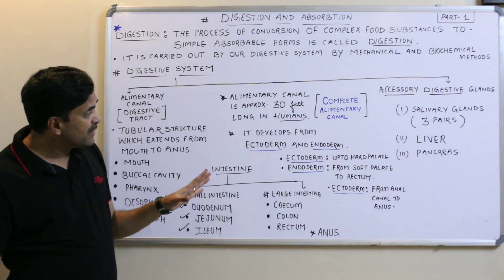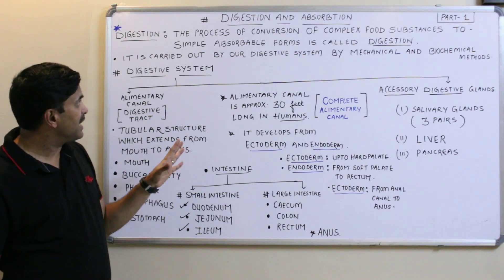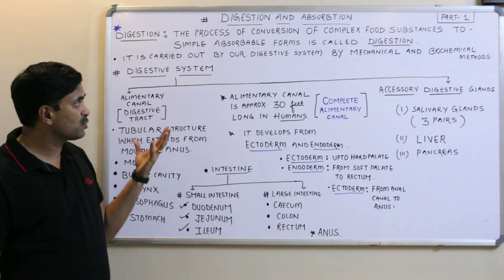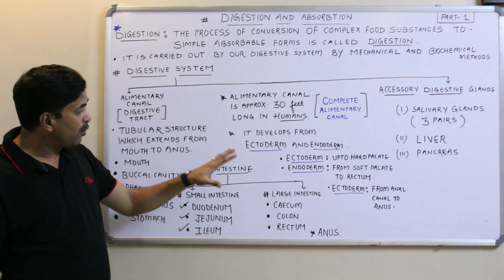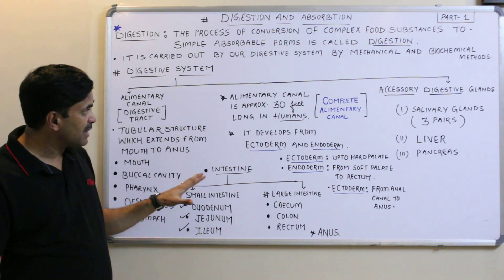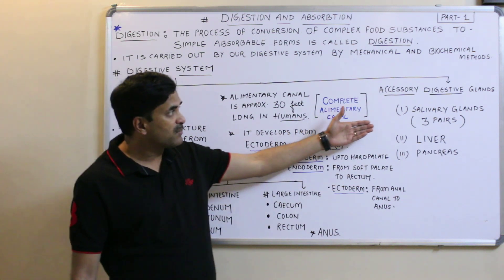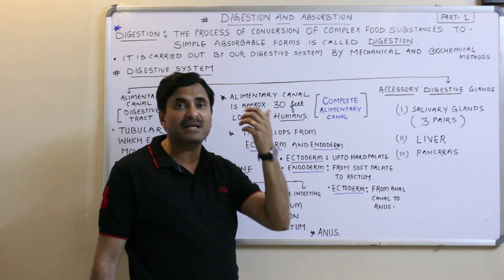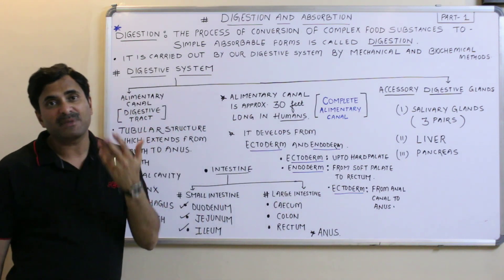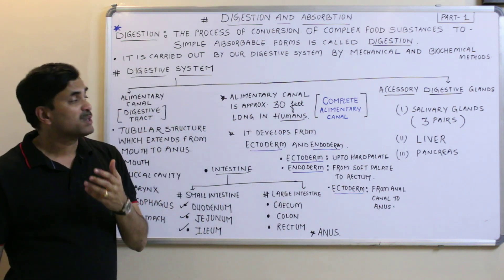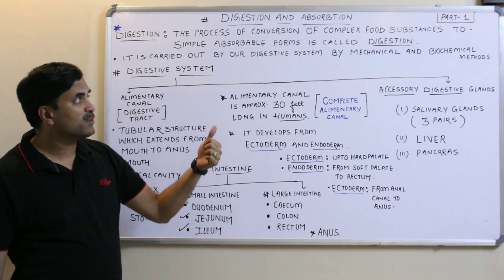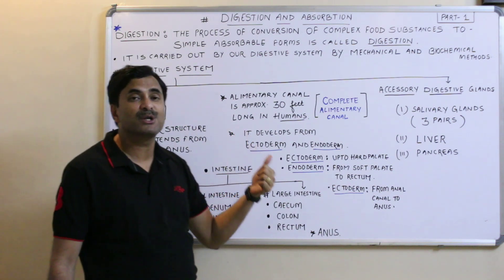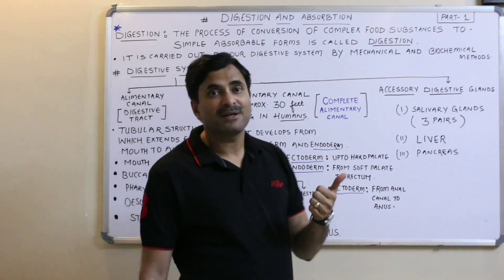In today's video we discussed that the digestive system is composed of two things: the alimentary canal and the accessory digestive glands. We will be studying all the various parts of the alimentary canal and the three types of digestive glands in detail in coming videos. At the end of the video a screenshot is provided so you can maintain your notes.